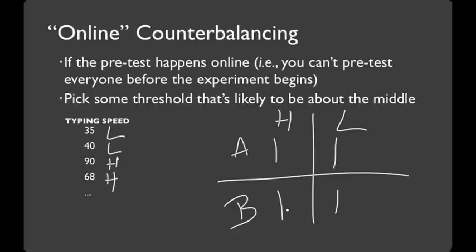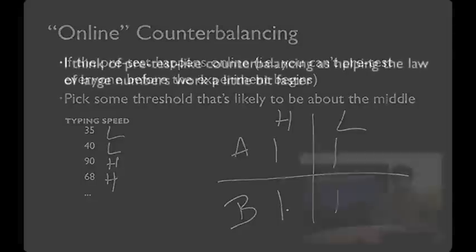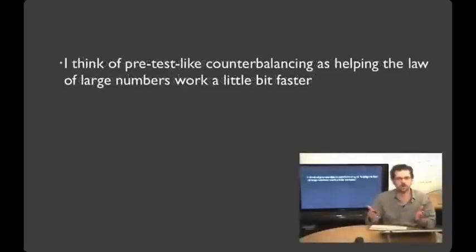You don't need to make sure that you have even numbers of high and low typers unless you're worried about that, making a material difference on the outcome. In fact, if you have enough participants, you can look at this two by two grid and compare the outcomes of the four cells. What you do need to make sure is that there are the same number of fast typers or high in A and in B, and the same number of slow typers or low in A and in B. There's lots of ways that you can do this kind of counterbalancing. In general, all of them are achieving the same thing, which is try and help the law of large numbers that you get in a between-subjects study work a little bit faster.